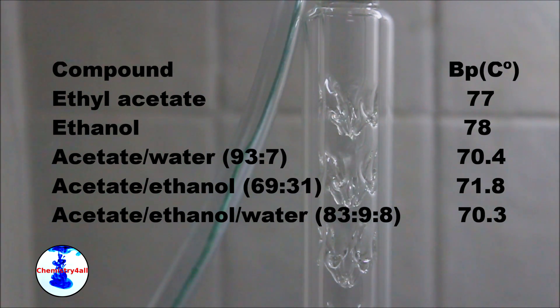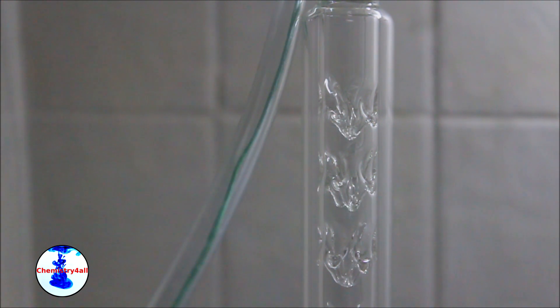we should be left with just ethanol, ethyl acetate and the acetate-ethanol azeotrope. And then assuming that ethanol is actually just a minor component in the solution, we should be distilling the acetate-ethanol azeotrope and then pure ethyl acetate.